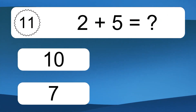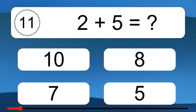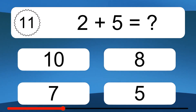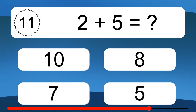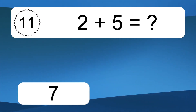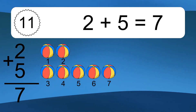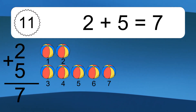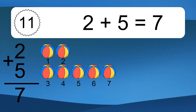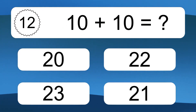2 plus 5 equals what? 2 plus 5 equals 7. Let's count it. 1, 2, 3, 4, 5, 6, 7.